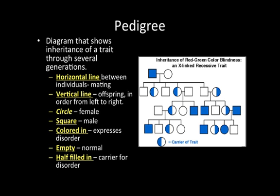Circles are female, squares are males. If you're completely colored in, you express the genetic disorder. If you're empty, you are normal — you're not a carrier and you don't express the trait. Half-filled in simply means that you're a carrier for that particular genetic disorder. Here we have an X-linked recessive trait — you'll notice that most of the females are carriers, and individuals that express the trait are almost all male, with only one female expressing it. That tips you off as to the type of genetic disorder: if it affects mostly men, it's more than likely a sex-linked trait.